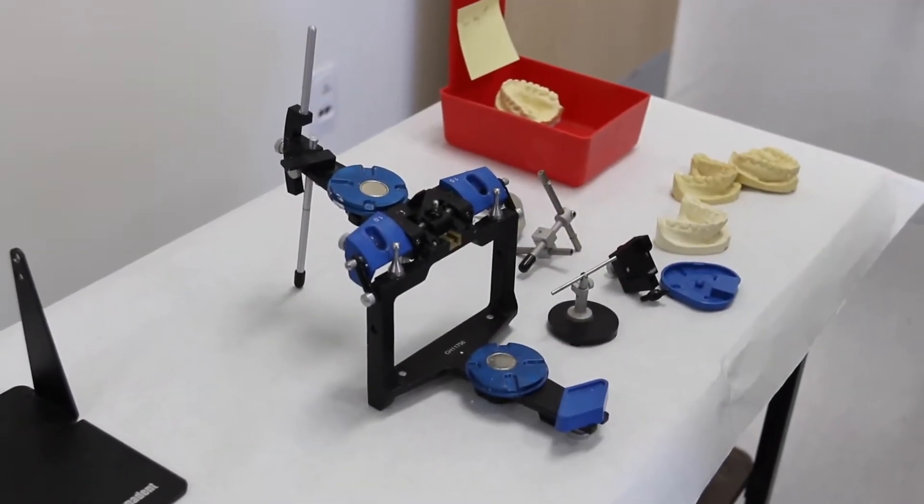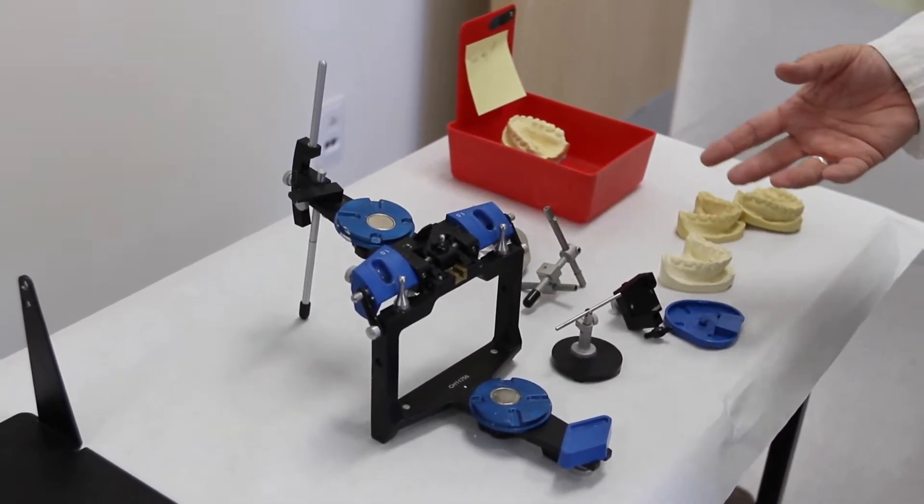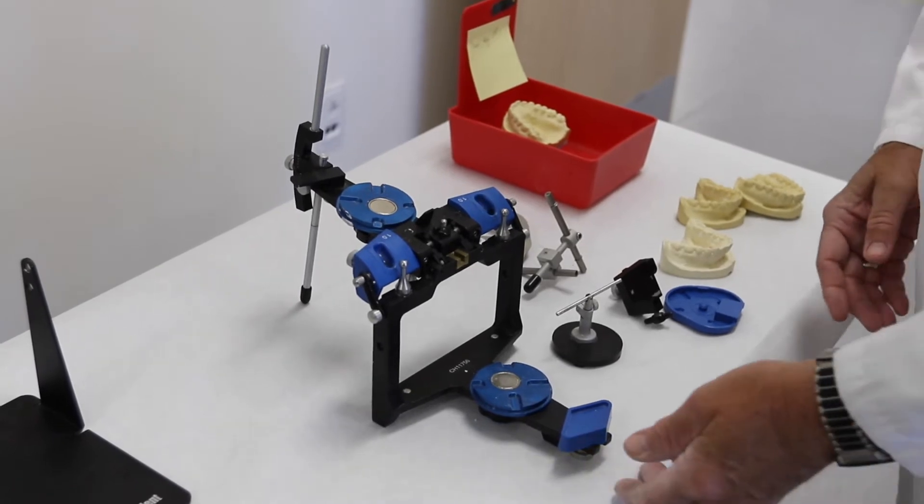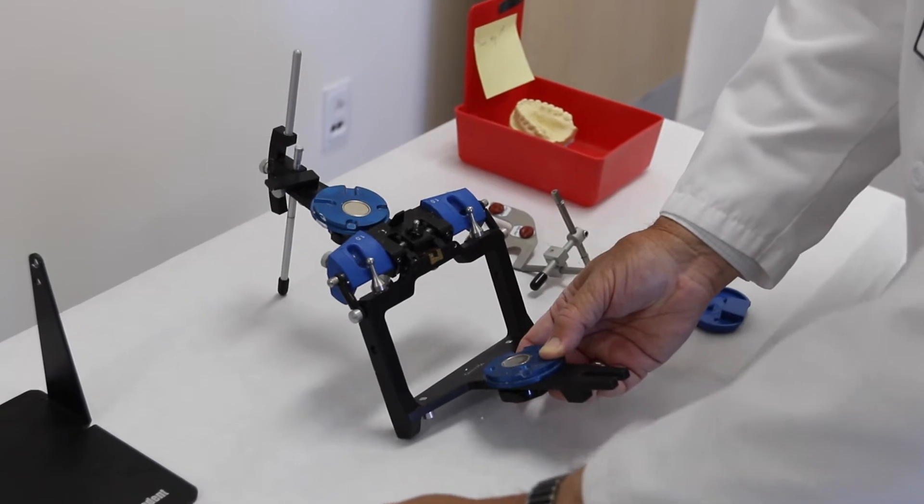In order to transfer these models to the articulator using the measurements that we've made, we'll start by replacing the incisal guide table with a mounting fixture.